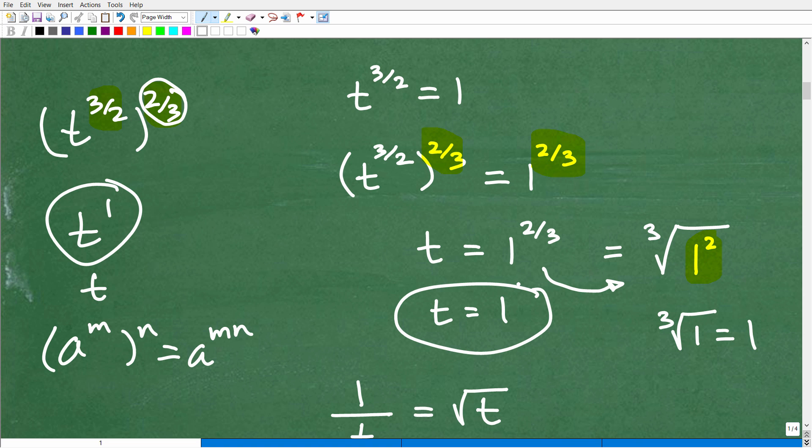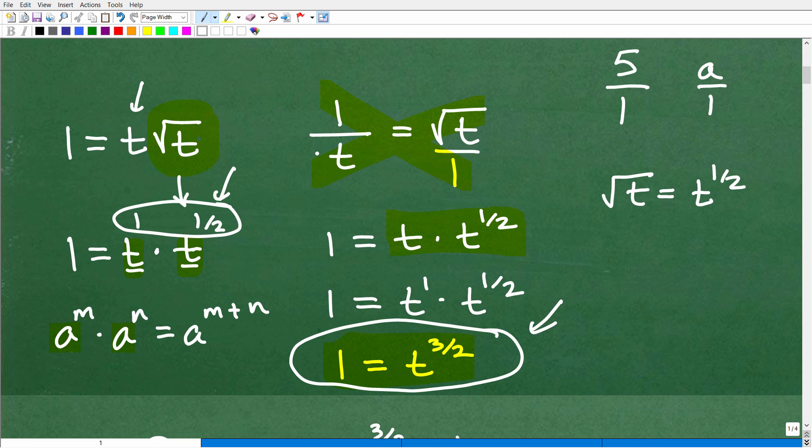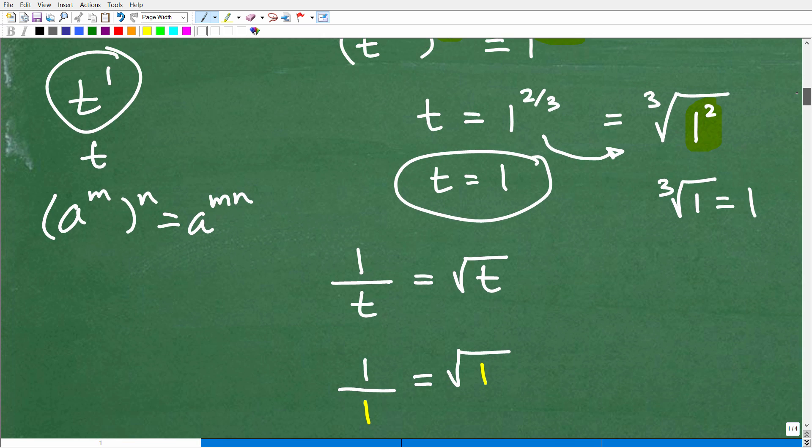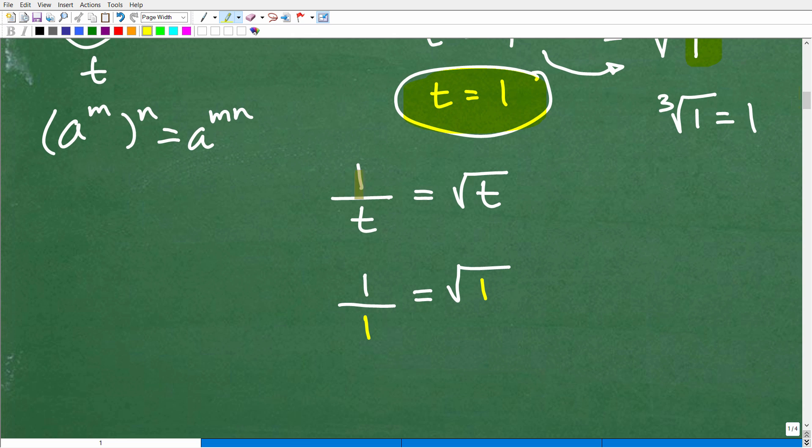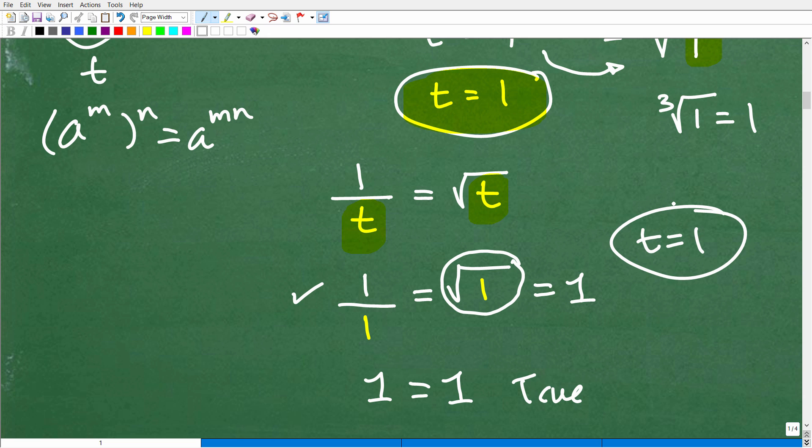But we're not quite done here yet, because technically we could have extraneous roots. Way back at the beginning, I could have cleared the fractions by multiplying both sides by t. When you multiply both sides of an equation by a variable, you can introduce extraneous roots. So we want to check our work. Let's plug t equals 1 into the original equation. We've got 1 over t - if t equals 1, we replace this t with 1. So I have 1 over 1, and we replace this t with 1. Is 1 over 1 equal to the square root of 1? The square root of positive 1 is 1, and 1 divided by 1 is 1. So 1 equals 1. That is a true statement. Therefore, t equals 1 is a good solution for this equation.